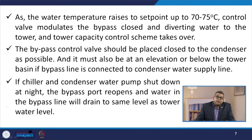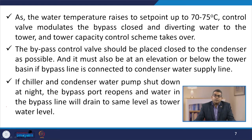As the water temperature rises to a set point of around 70 to 75 degrees Fahrenheit, the control valve modulates the bypass closed, diverting water to the tower, and the tower capacity control scheme takes over. The bypass control valve should be placed as close to the condenser as possible, and it must also be at or below the tower basin elevation if the bypass line is connected to the condenser water supply line.